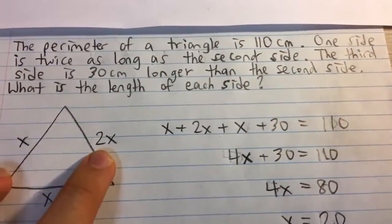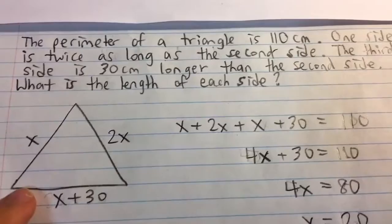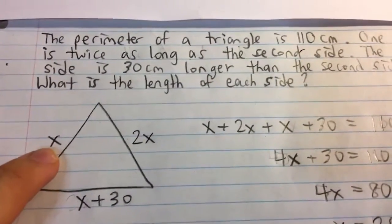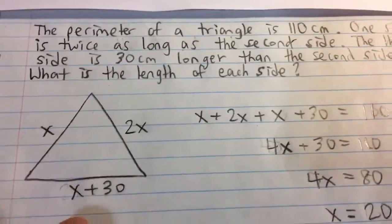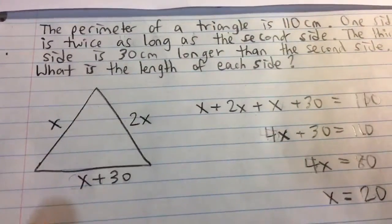And it also says that the third side is 30 centimeters longer than the second side. So remember, our second side is x. So we add 30 to that, it becomes x plus 30.